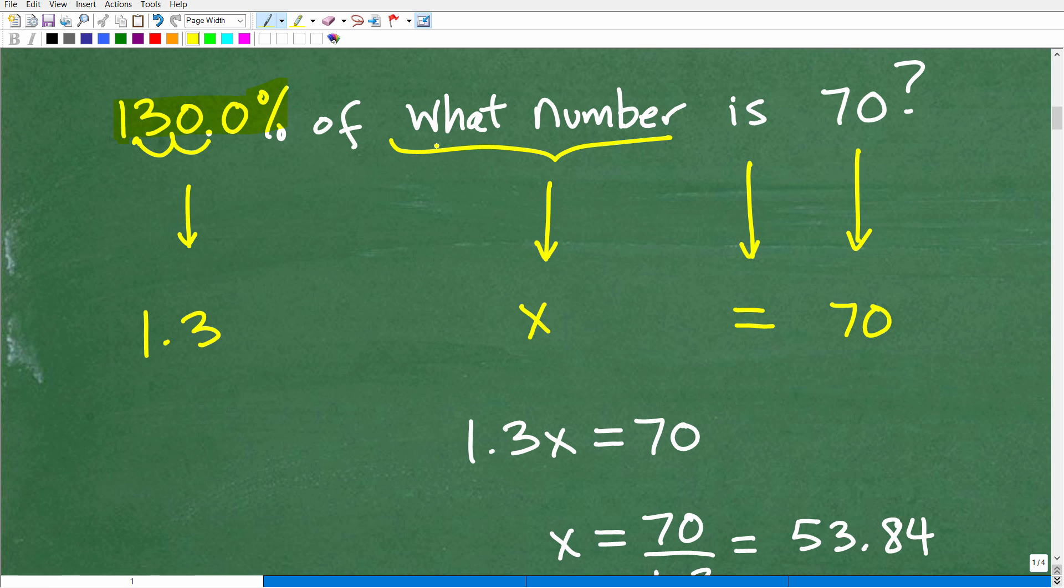So 130% is the same thing as 1.3 as a decimal. So 130% of what number? So in algebra, when you see something like what number, we're looking for some number. Well, that's why we use a variable like x. This is just a placeholder represents some number or in this case, what number we're looking for, right? So we'll just use a variable x.